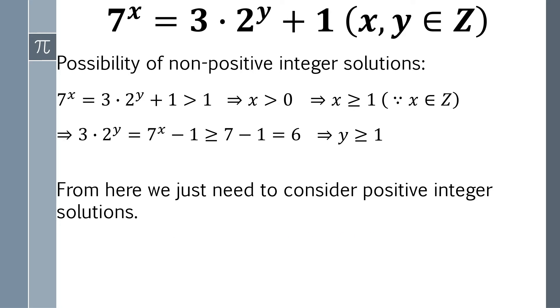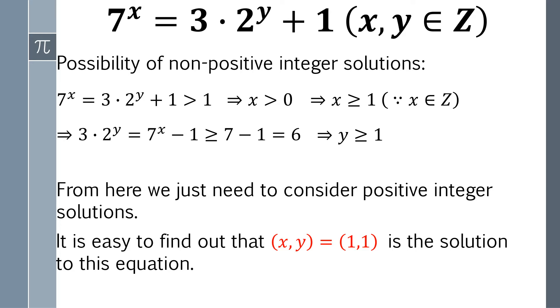And it's easy for us to find out that x and y equals 1 and 1 is a solution to this equation. This is the first group of solution.